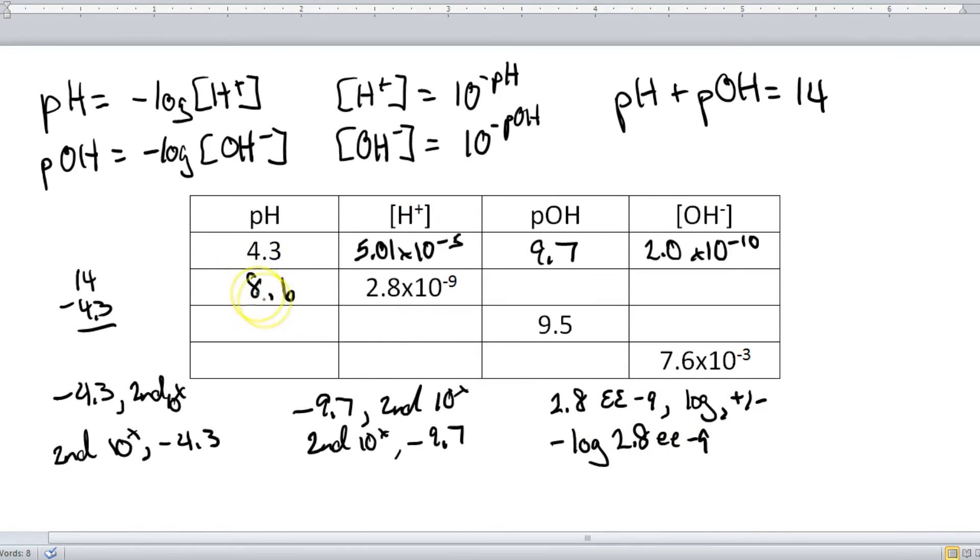And then once you have this pH of 8.6, well, then it's really simple. pH plus pOH equals 14. So 14 minus 8.6, and you get 5.4.